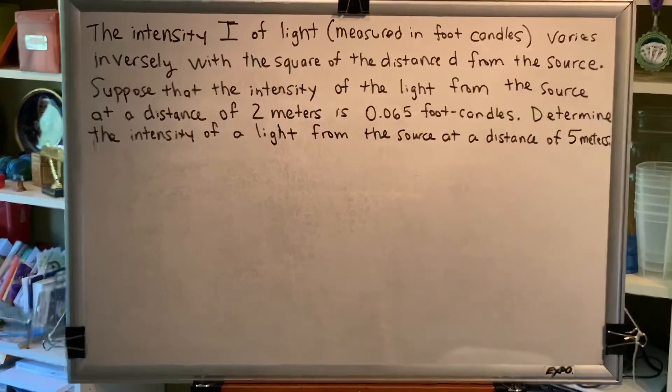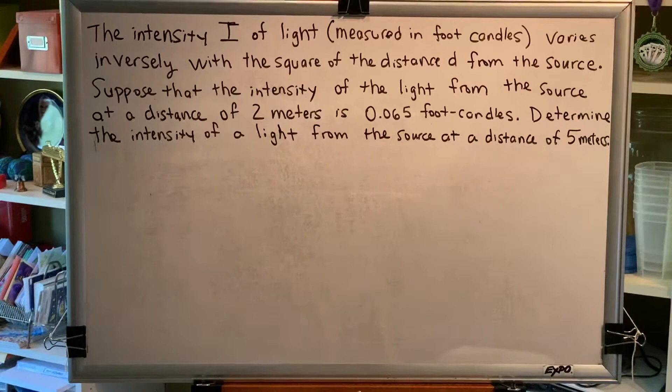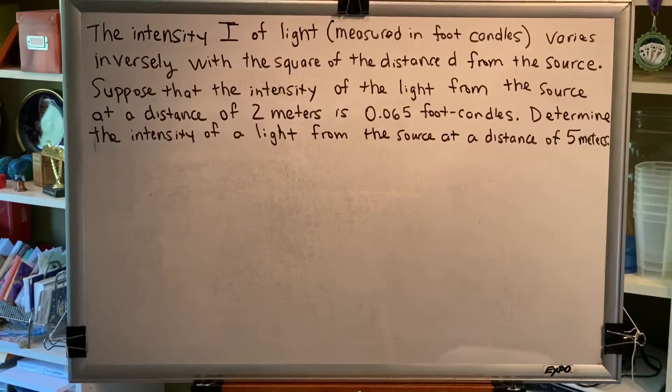The topic of this video is constructing a model using variation. Here's a problem. The intensity I of light varies inversely with the square of the distance d from the source. Suppose that the intensity of the light from the source at a distance of 2 meters is 0.065 foot candles. Determine the intensity of a light from the source at a distance of 5 meters.